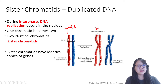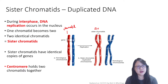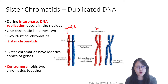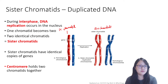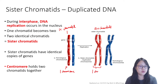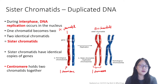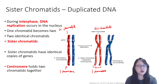Sister chromatids are held together at the centromere position. Although this is one chromatid and this is two chromatids (sister chromatids), both are still considered one chromosome — just in different form. This chromosome appears as a chromatid, whereas after replication it appears as sister chromatids. We calculate the number of chromosomes by counting the number of centromeres.